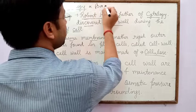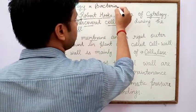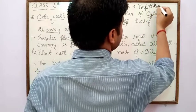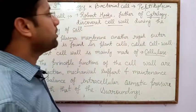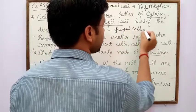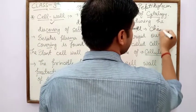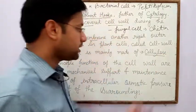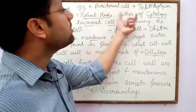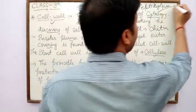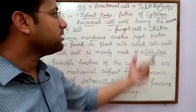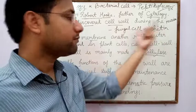In bacterial cell, cell wall is made up of peptidoglycan. While in fungal cell, cell wall is made up of chitin. So in plant cell, cell wall is made up of cellulose; in fungal cell, chitin; and in bacterial cell, peptidoglycan.